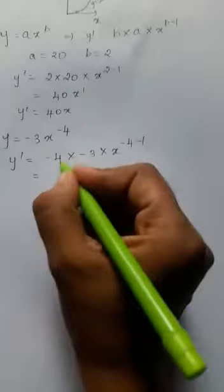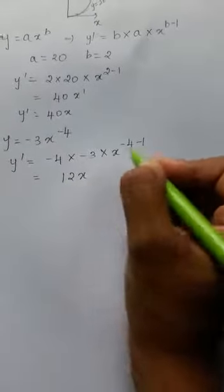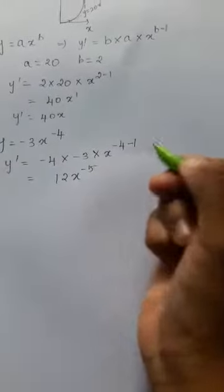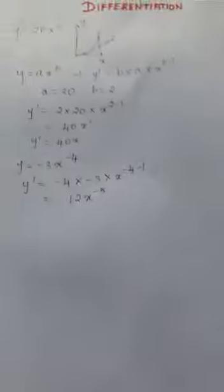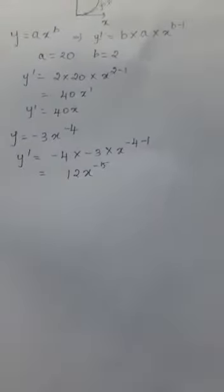So negative 3 and negative 4 gives me 12x to the power minus 4 minus 1 gives me minus 5. That's it. What about when you get more than one term in your equation? Let's see an example for that.